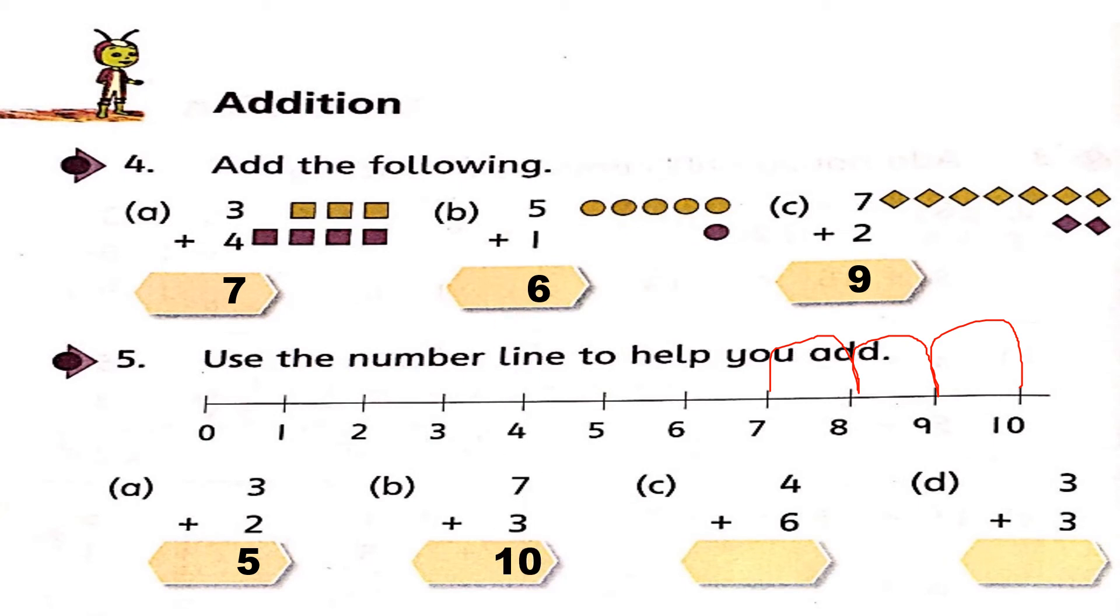Now, in part C, question 4 plus 6. Bigger number is 6, so again I am standing on number 6 now. Start counting after 6, 4 more times. Start jumping: 1, 2, 3, 4. So, we get answer 6 plus 4 make 10. Very good.